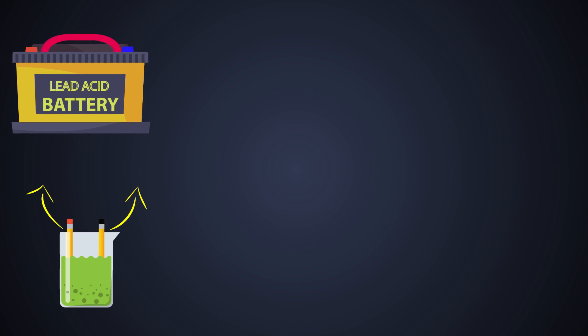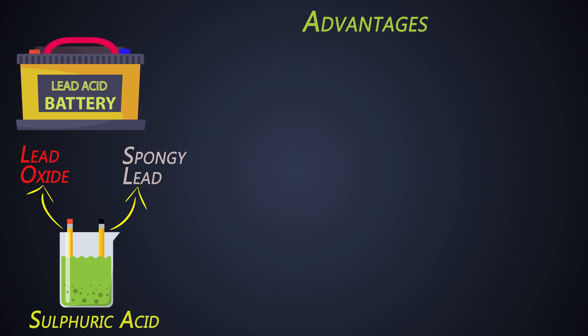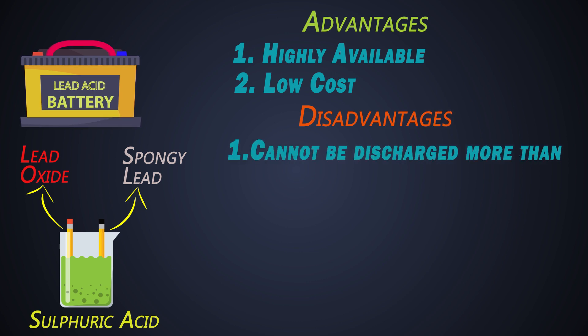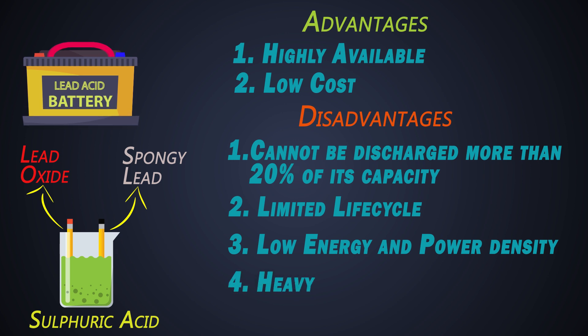The negative material of lead acid battery is made of spongy lead, and positive material is made of lead oxide. Its electrolyte is made of diluted sulfuric acid. The advantages are: it is available in production volume, it has comparatively low cost, it is over 100 years old technology. But we cannot discharge more than 20% of its capacity. It has very limited life cycle, very low energy and power density, and they are very heavy. These batteries need maintenance as well.